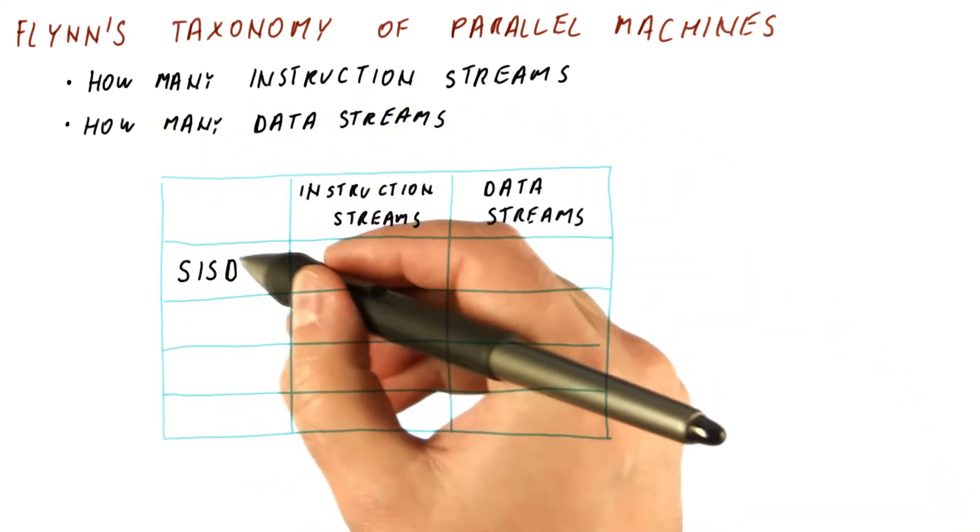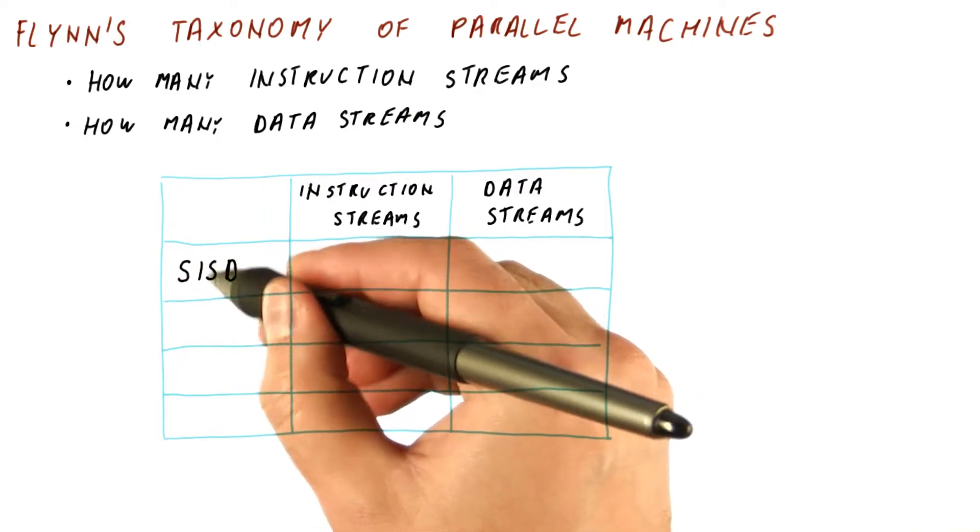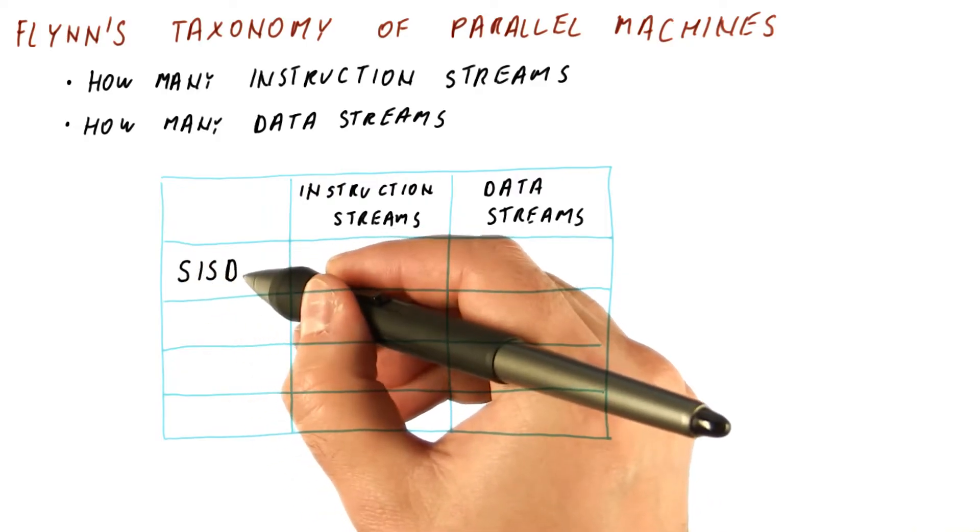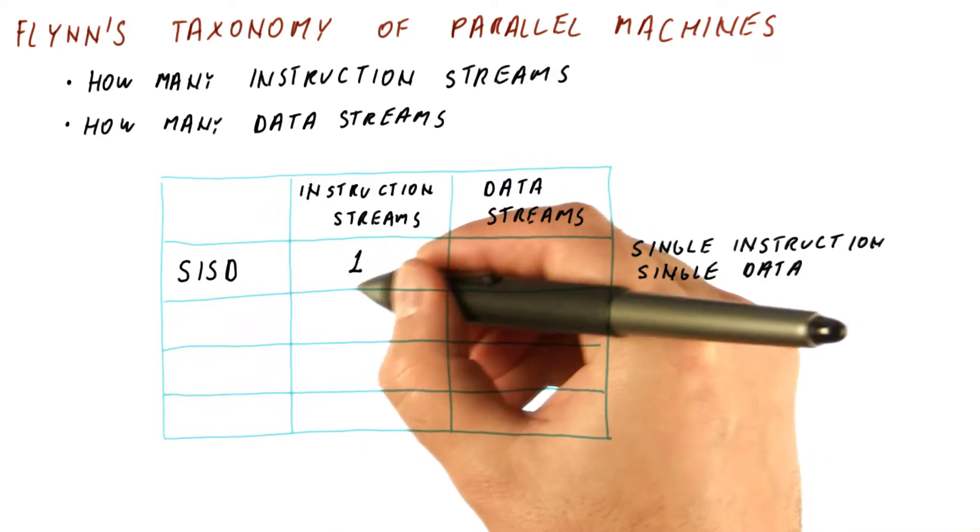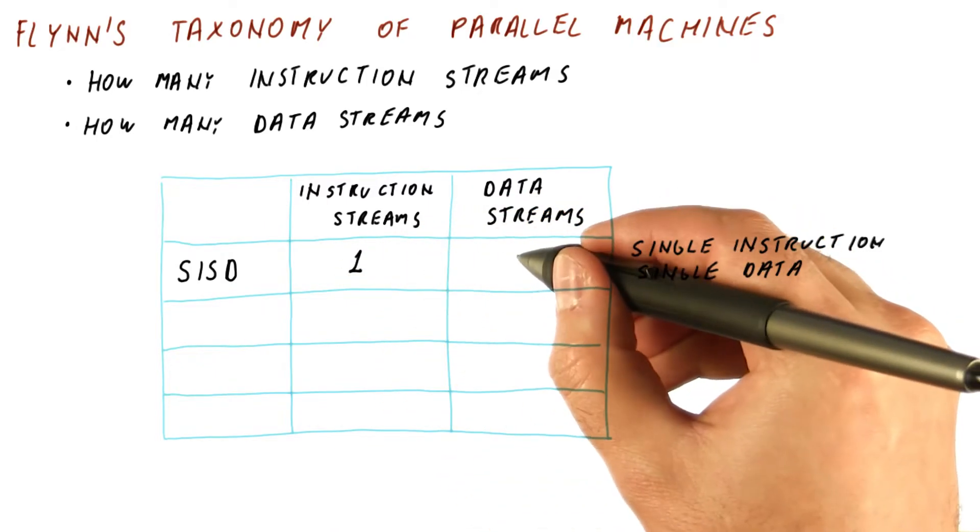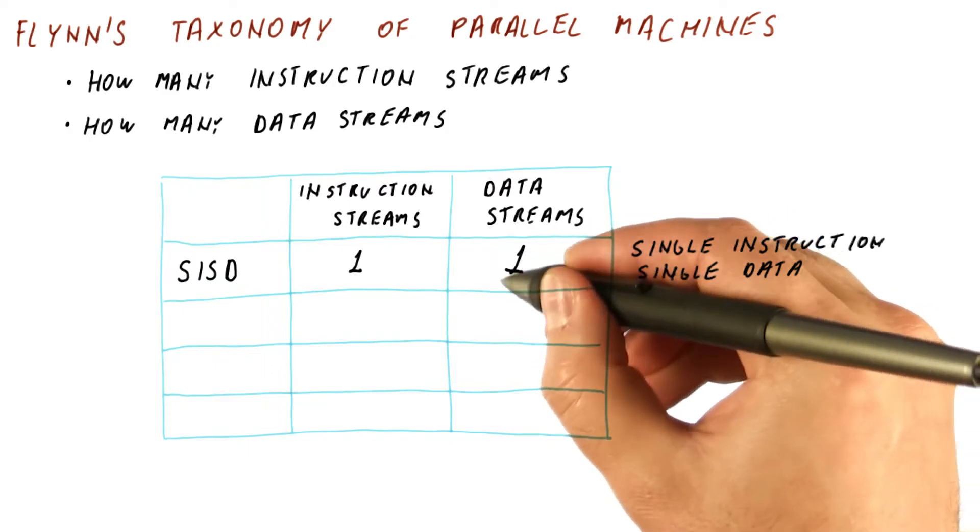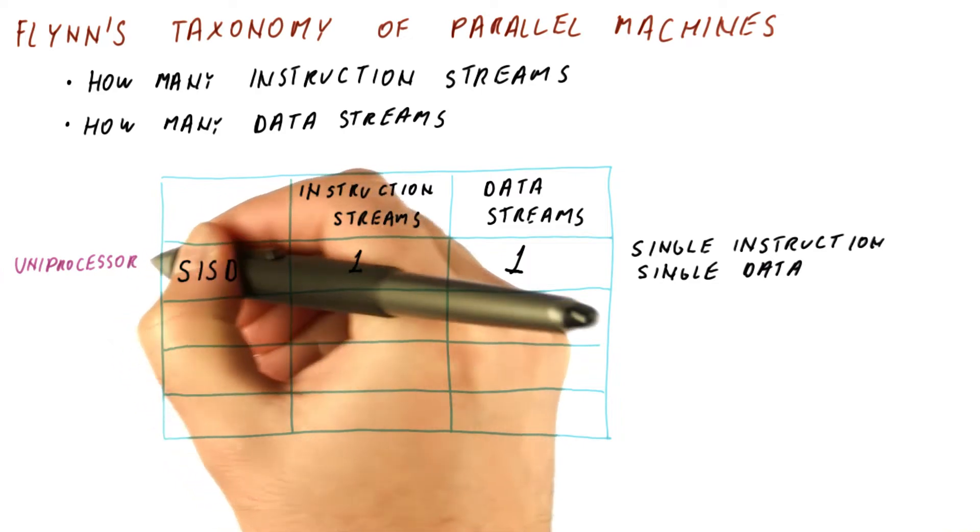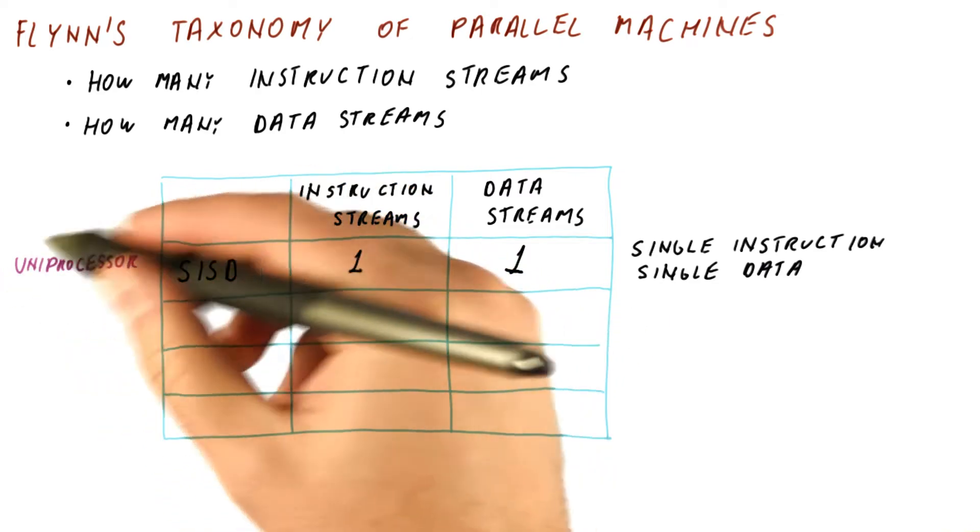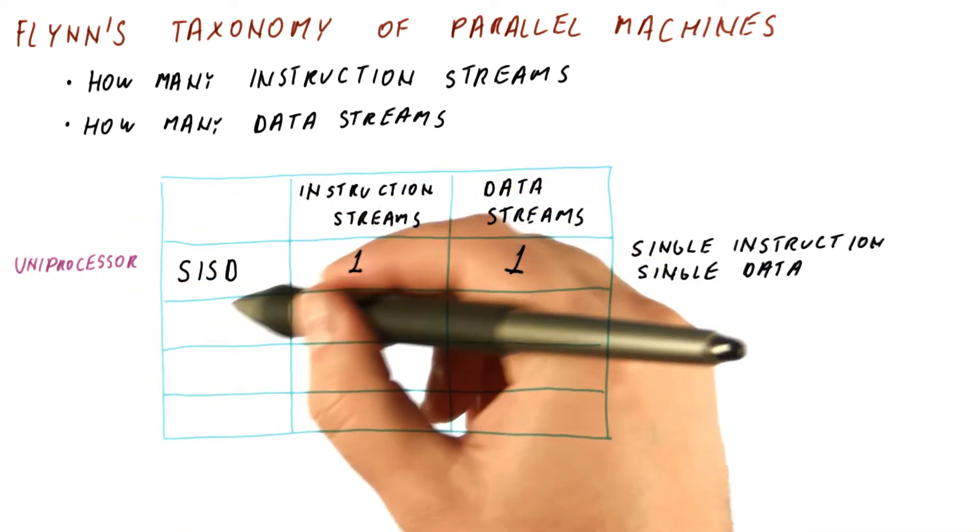The first type of machine is single instruction, single data, or SISD. Logically, this type of machine executes one instruction stream, and each instruction operates on one data stream. This is really your normal uniprocessor. For example, a single core machine is an SISD machine.